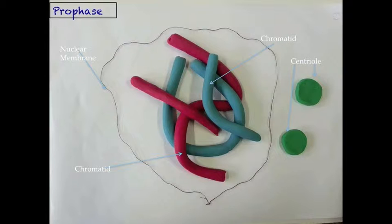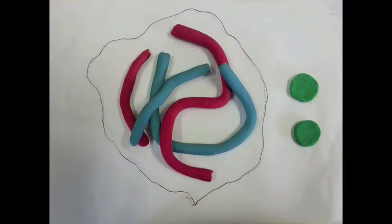The next stage of mitosis is known as prophase. During early prophase, the nuclear membrane still exists but the nucleolus has disappeared. Chromatids have started to duplicate and the centromere that existed earlier has now formed two centrioles.